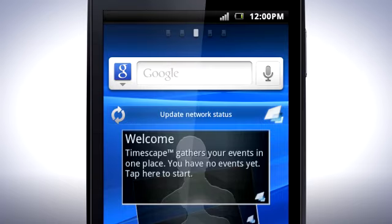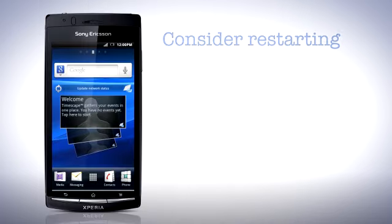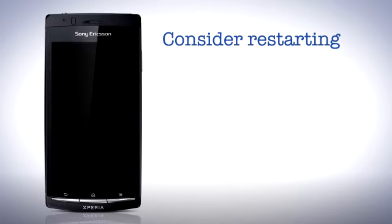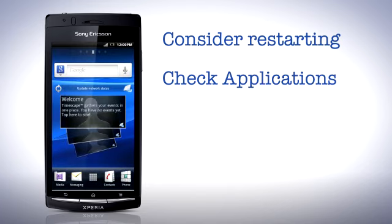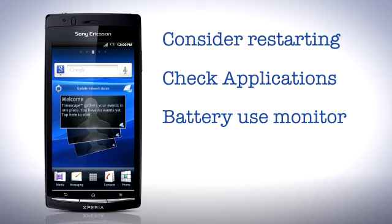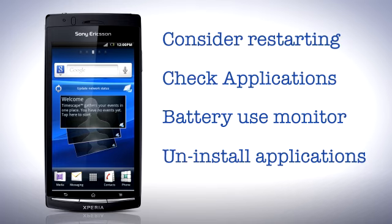If you feel that your phone is a bit more sluggish than you were used to, or that the battery level suddenly starts to drop faster than usual, consider restarting your phone. While applications ordinarily shut down correctly without you having to think about it, some applications from Android Market might have issues that prevent them from doing so, using unnecessary resources. A restart will make them stop consuming power until you start them again. Keep an eye on the battery use monitor to see if an application is using excessive amounts of battery, and uninstall the application in question if the problem persists.